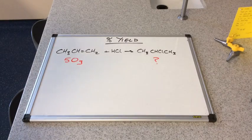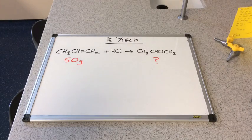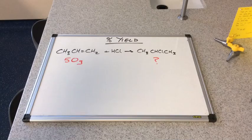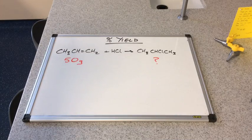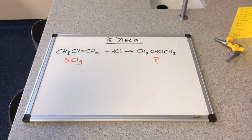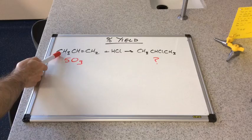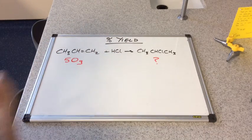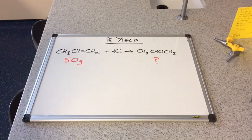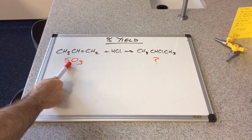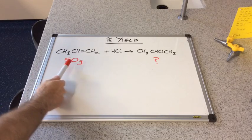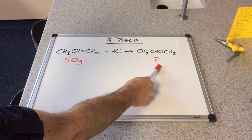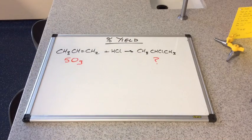In this video we're looking at the topic percentage yield. We're going to start off with a regular reacting amount calculation. We've got propene reacting with HCl producing 2-chloropropane. If we've got 50 grams of propene, how much should we expect to get of product?